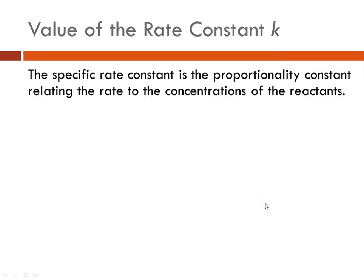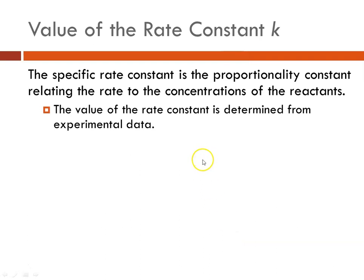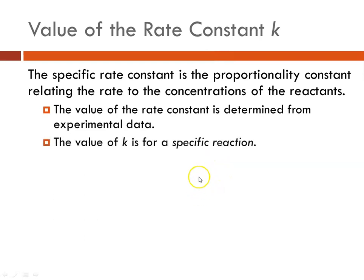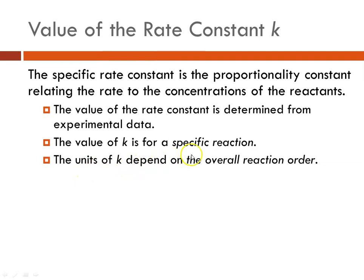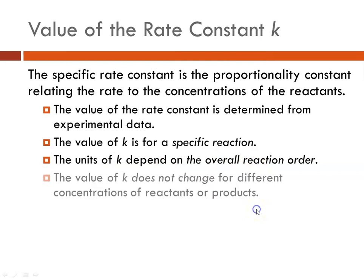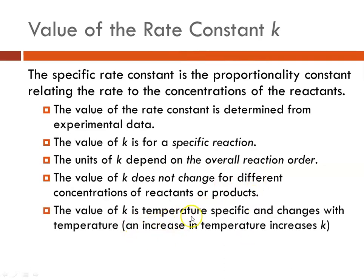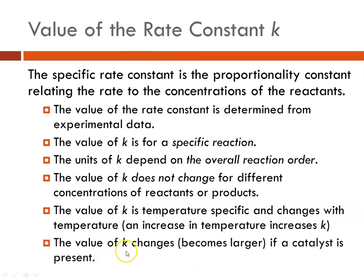The value of the rate constant is determined from all of these concentrations and the rate data — specifically from experimental data for concentration and observed rate. Again, it's very specific for every reaction and for each temperature. The units of K will depend on the overall order, so they can be something like molarity cubed or molarity squared per second. The units depend on the overall reaction order. K does not change for different concentrations of reactants or products, but it does change at different temperatures. As you increase the temperature, the value of the rate constant increases, and it also increases if a catalyst is present.